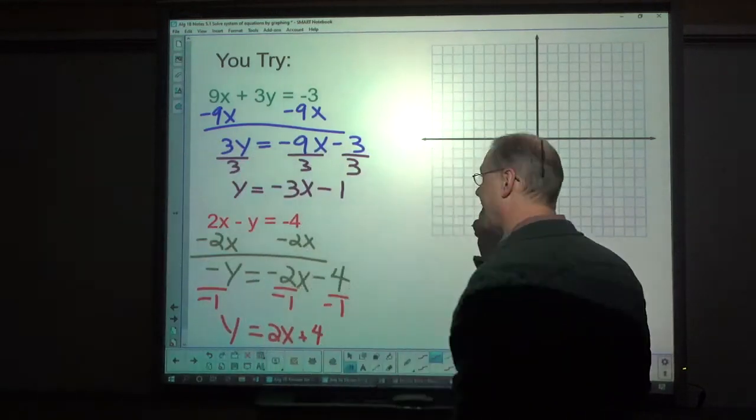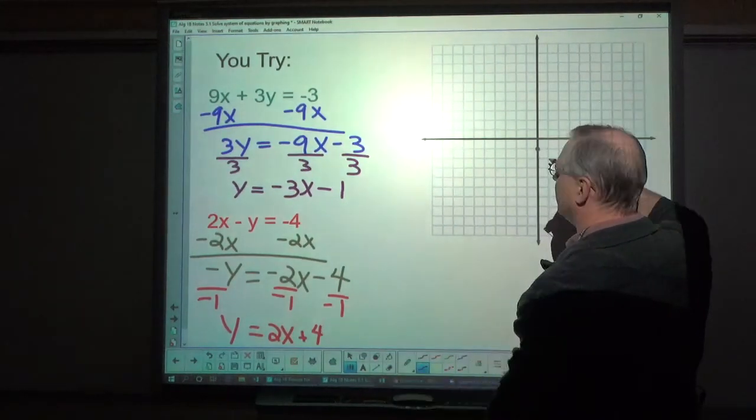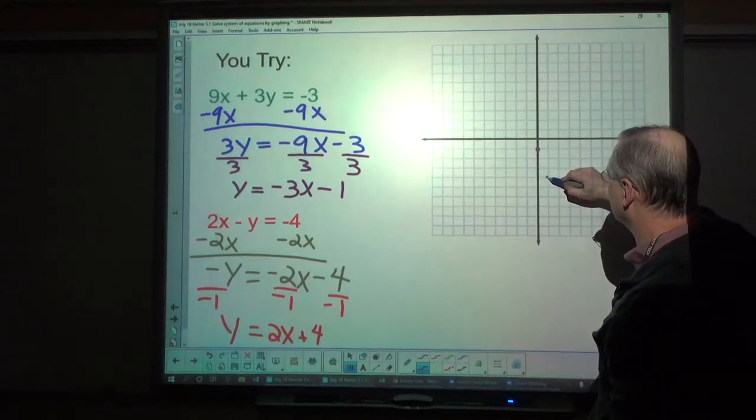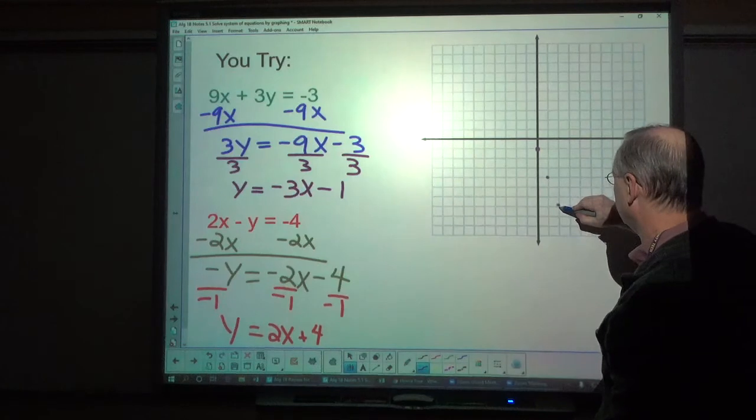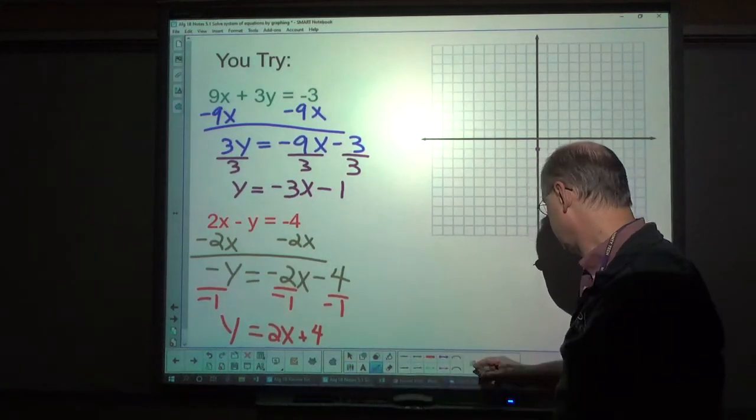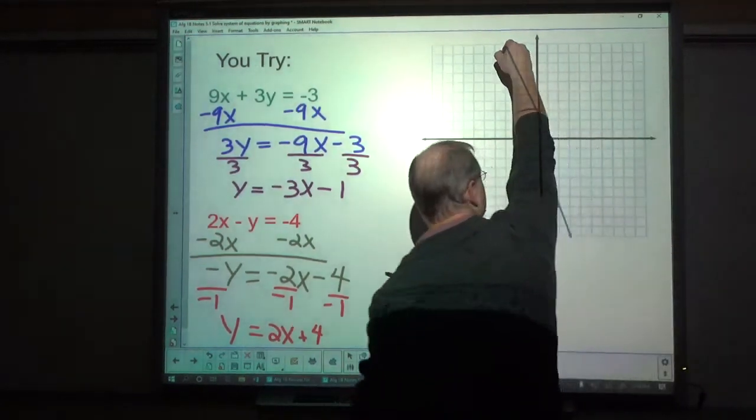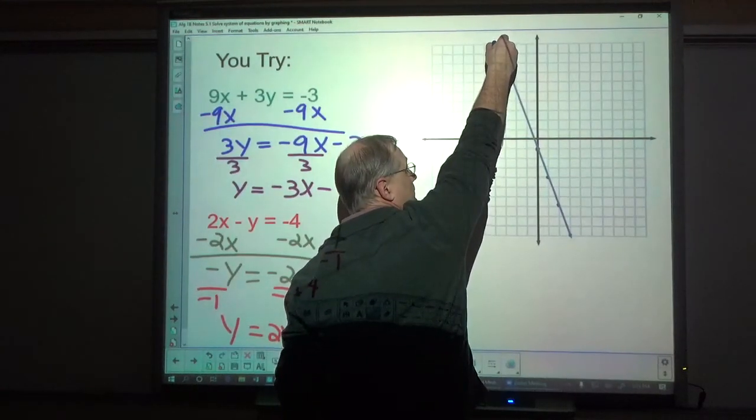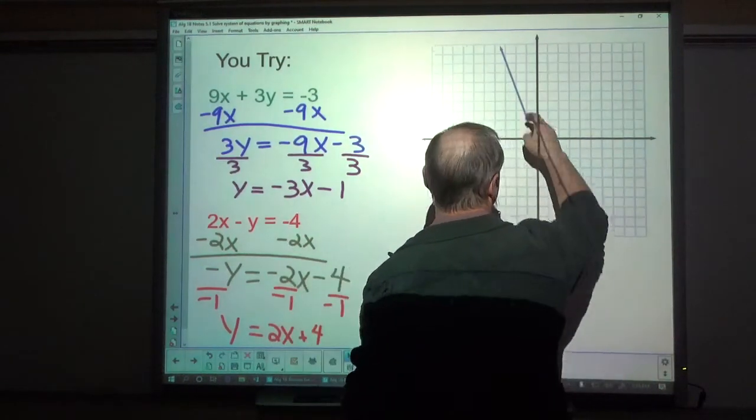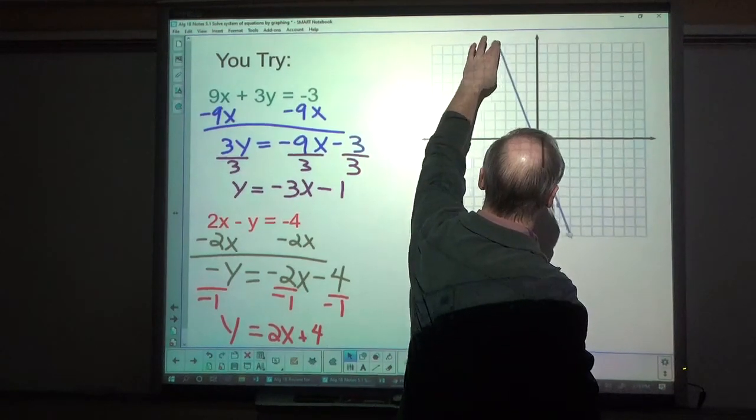Alright, so let's graph this. Start with this one. Down 1. And then down 3: 1, 2, 3, to the right 1. 1, 2, 3, 1. 1, 2, 3, 1. I can draw my line. Good, pretty close. Again, you want to be sure you're accurate. It should go right through that point. So it gets a hair off, now it's better.